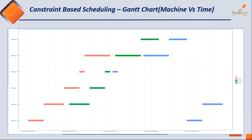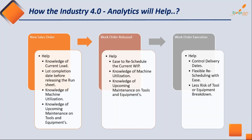This example shows only three lots, but you can have any number of lots. You can have different business units running two different product lines with two different screens. It depends entirely on the customer's requirements. I will now quickly take you through how Industry 4.0 actually helps.